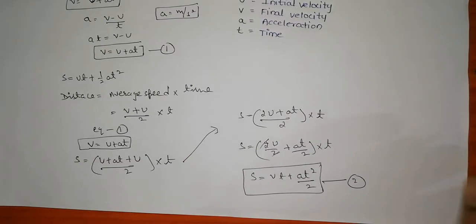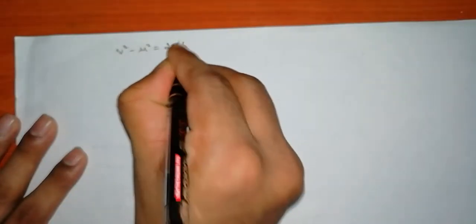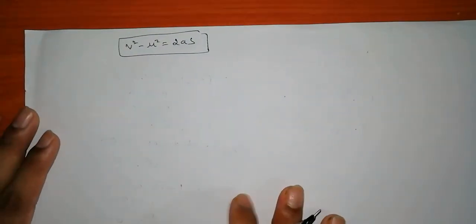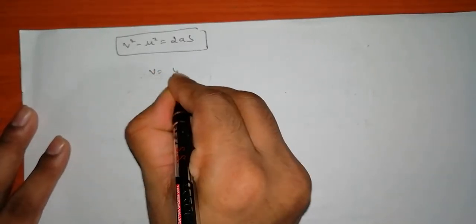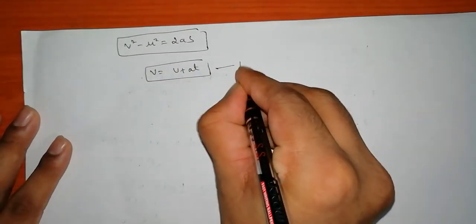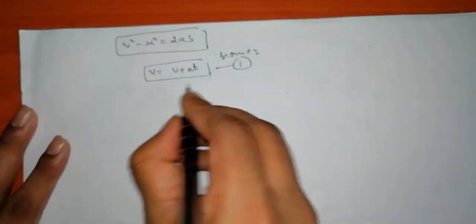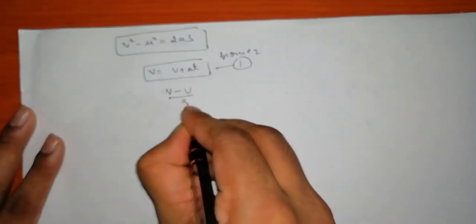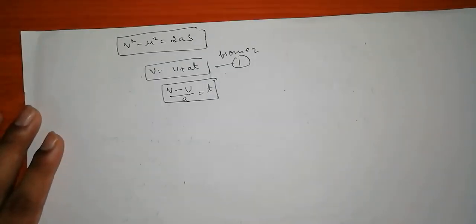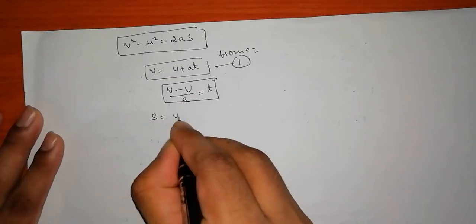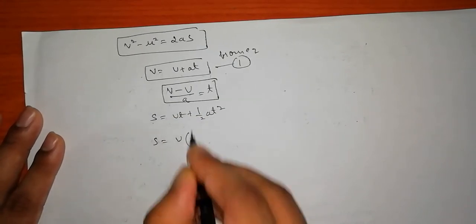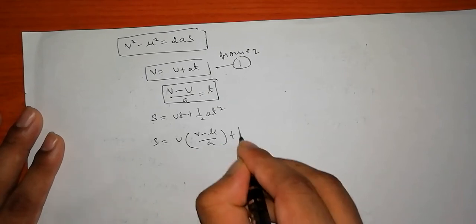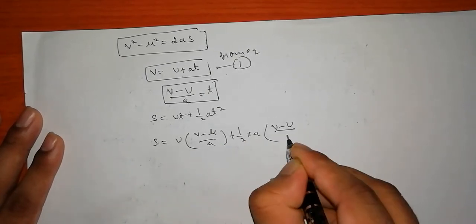Now let us derive the third equation: V² - U² = 2AS. From equation 1, V = U + AT, we get T = (V - U) / A. Substituting into equation 2, S = U × (V - U)/A + ½ × A × [(V - U)/A]².